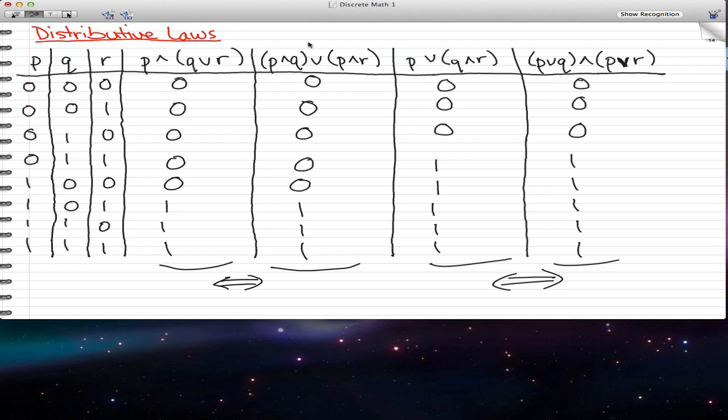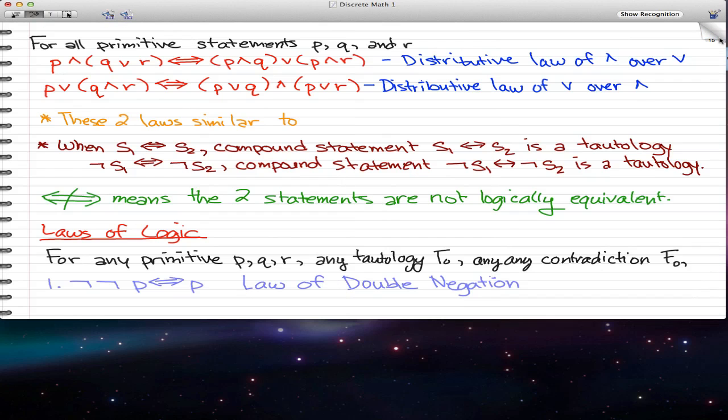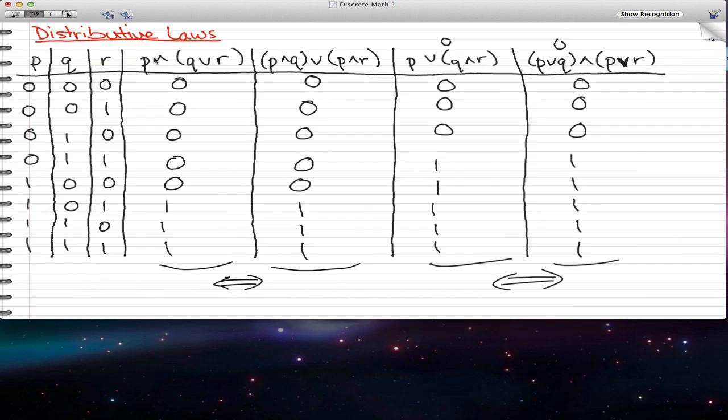So this statement is logically equivalent to this statement. You can see that for all the primitive statements p, q and r, we found that this is logically equivalent to that. So pretty much this p and (q or r) makes this when you expand it up.